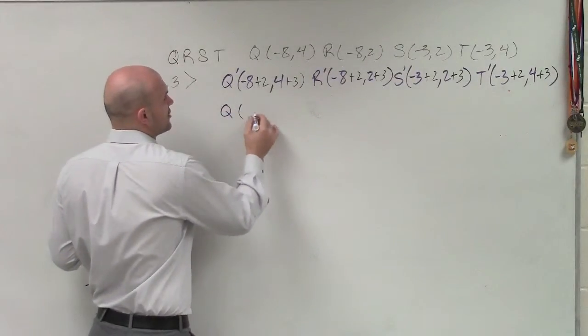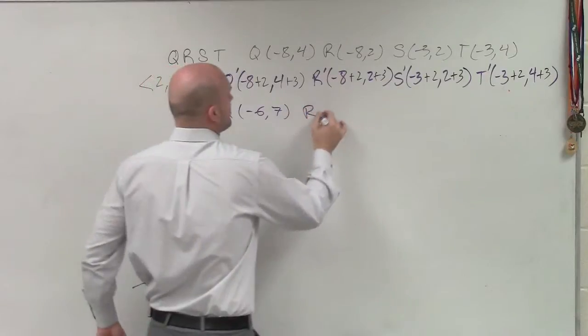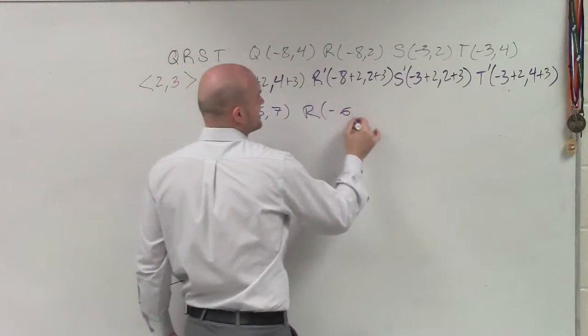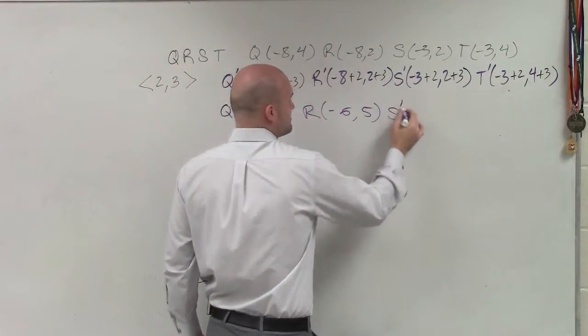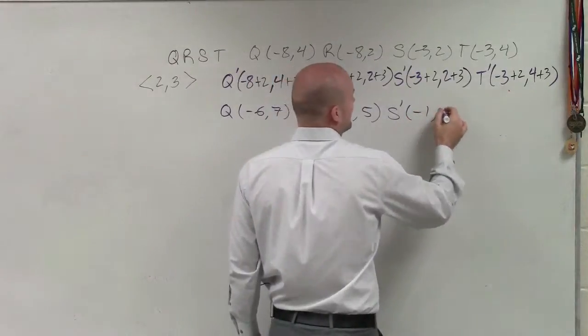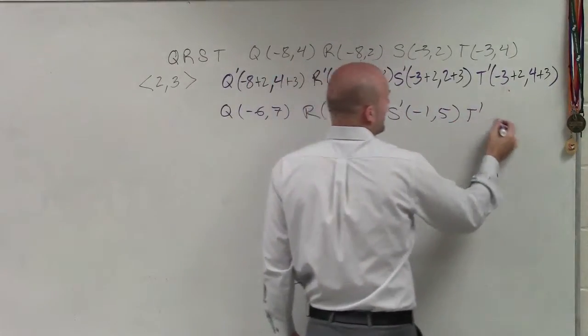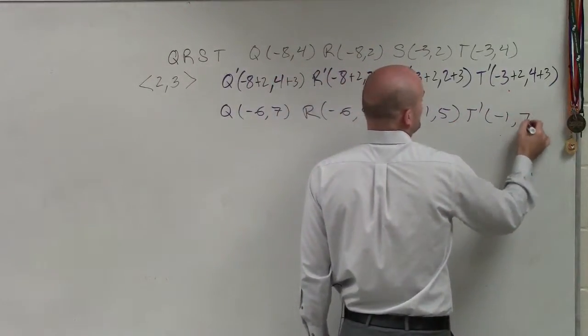So let's go and simplify our points. Q prime is now going to become negative 6, 7. R prime is now going to become negative 6, 5. S prime is now negative 1, 5. And T prime is now negative 1, 7.